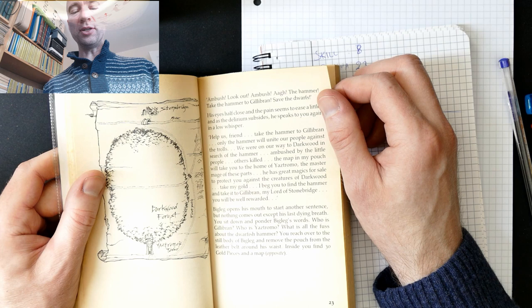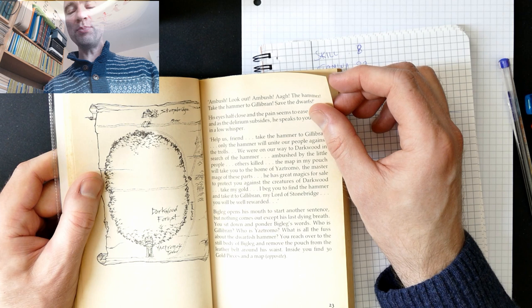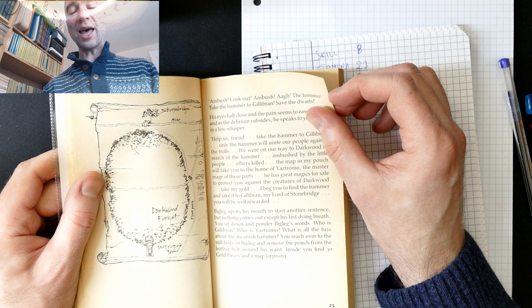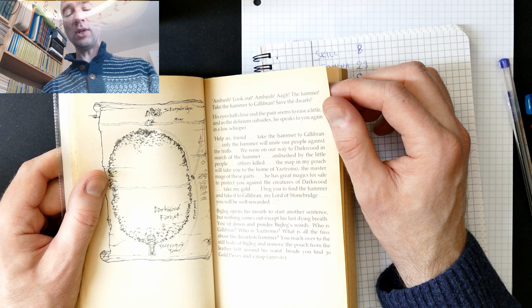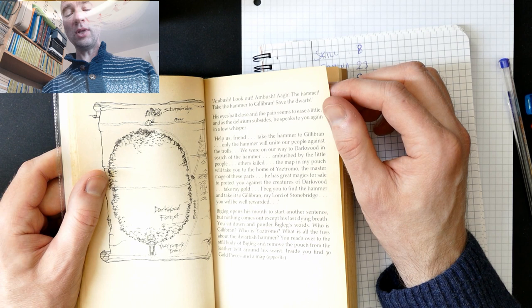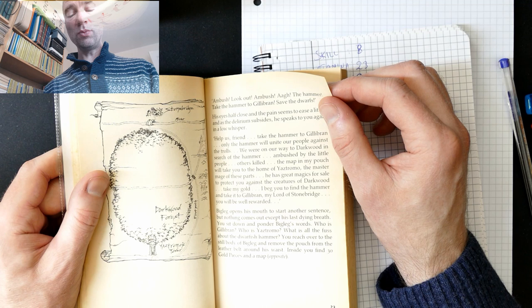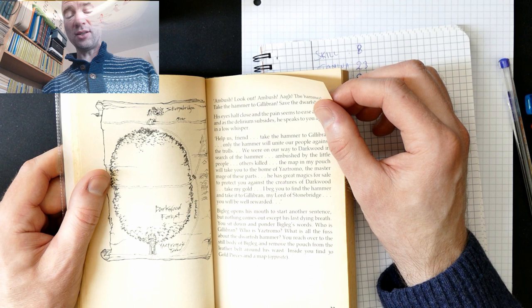His eyes half close, and the pain seems to ease a little, and as the delirium subsides, he speaks to you again in a low whisper. Help us, friend! Take the hammer to Gillibrand! Only the hammer will unite our people against the trolls! We were on our way to Darkwood in search of the hammer, ambushed by the little people. Others killed. The map in my pouch will take you to the home of Yaztromo, the master mage of these parts. He has great magics for sale to protect you against the creatures of Darkwood. Take my gold. I beg you to find the hammer and take it to Gillibrand, my lord of Stonebridge. You will be well rewarded.